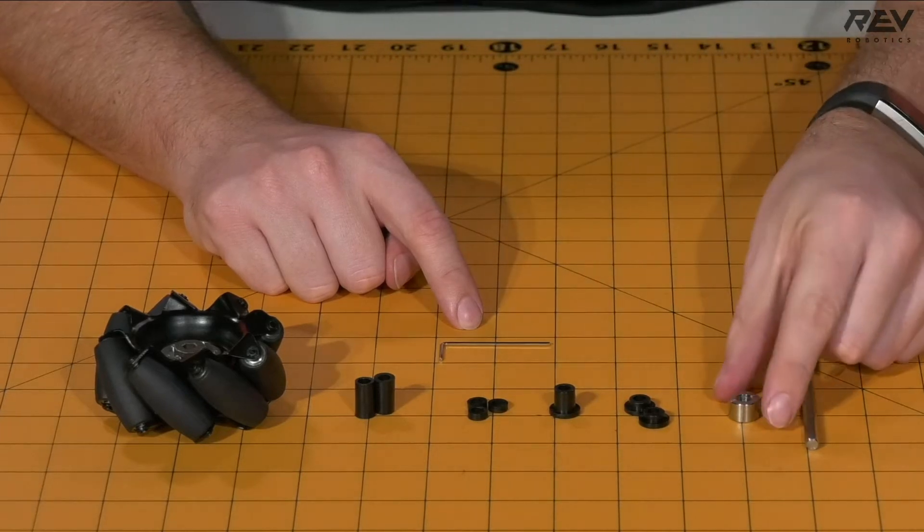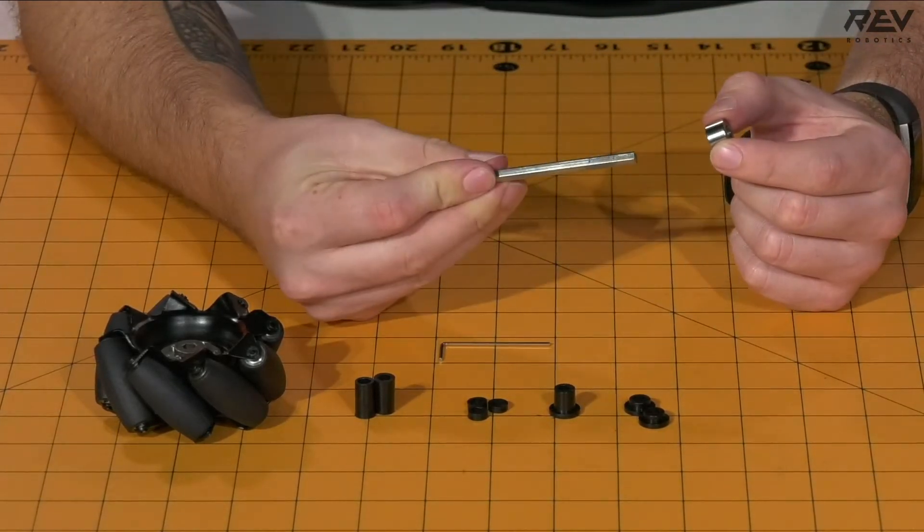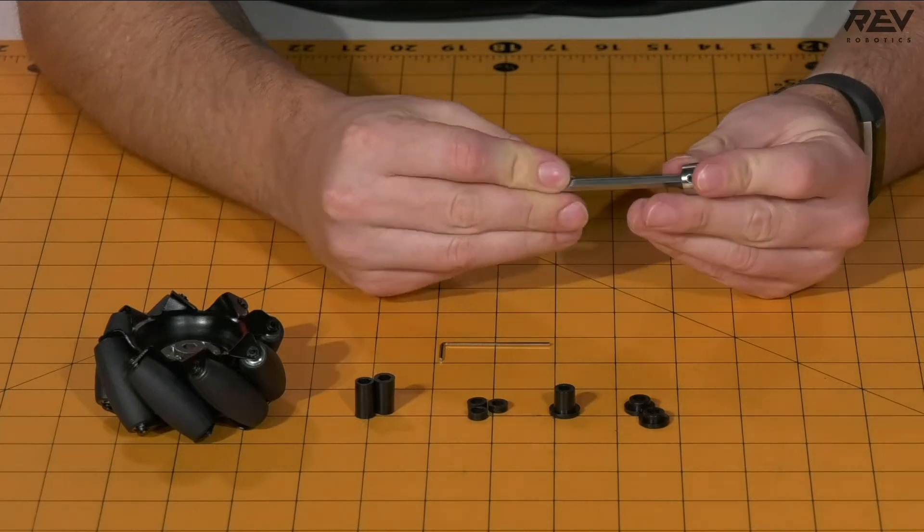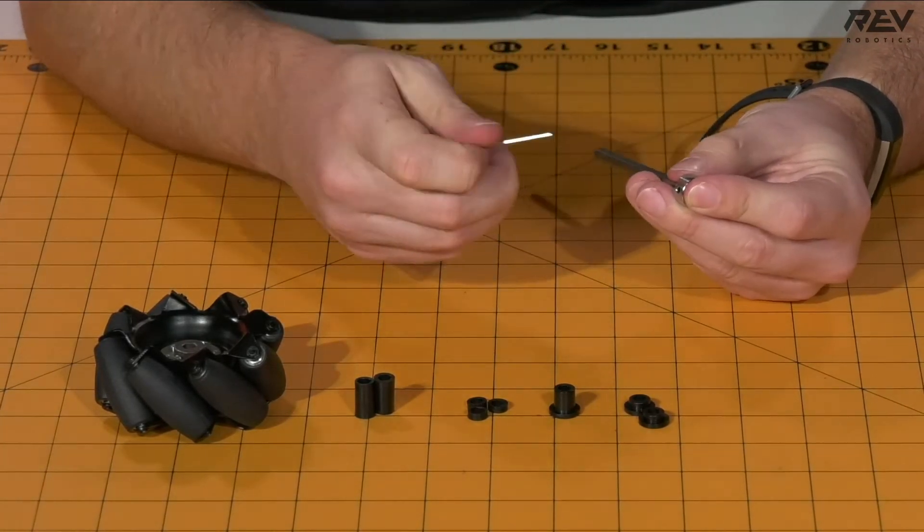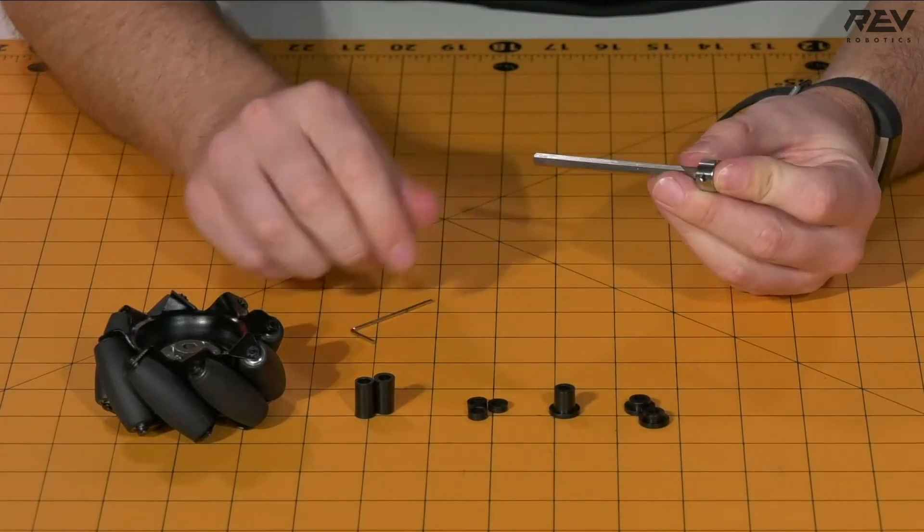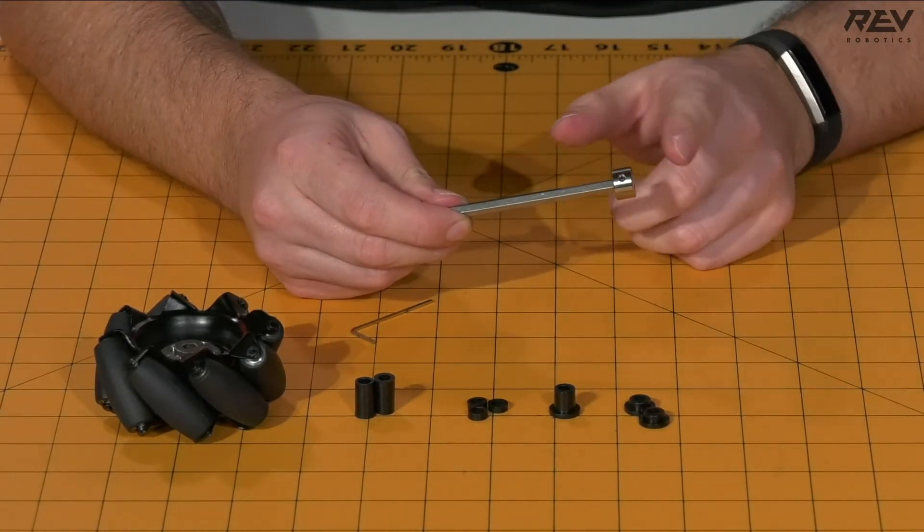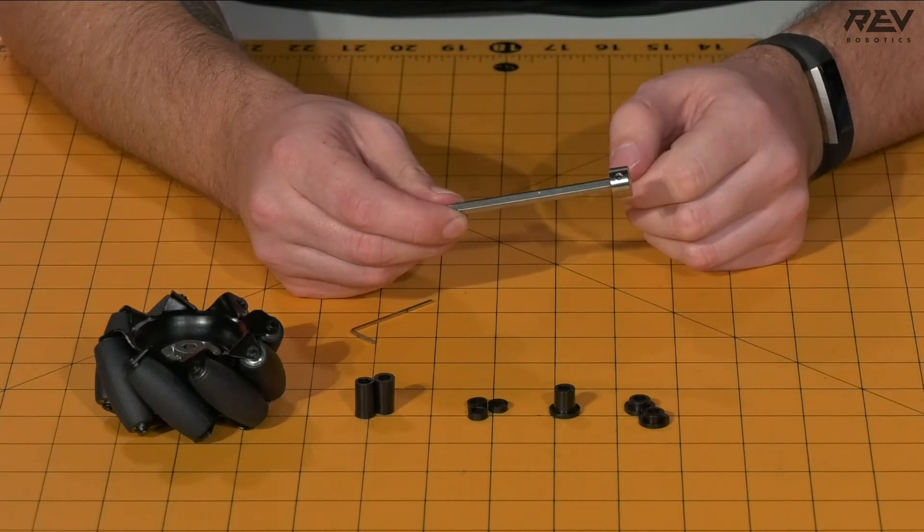To begin, take your shaft collar and add it to the end of your 5mm hex shaft. Make sure this sits flush with the end of the hex shaft, as all measurements will be off the hex shaft itself.